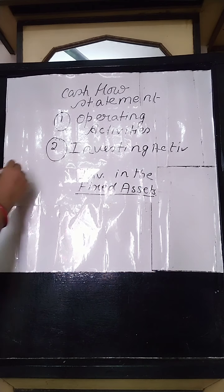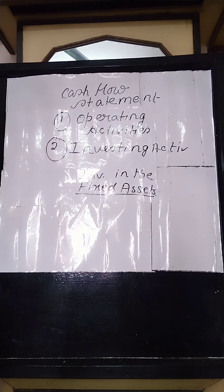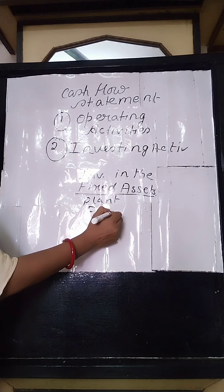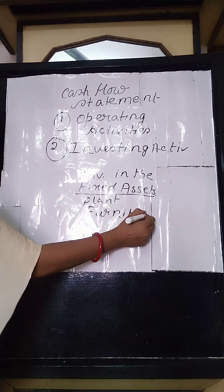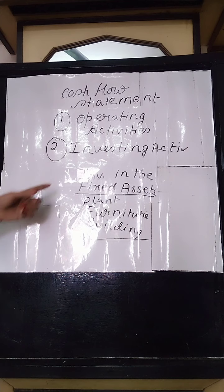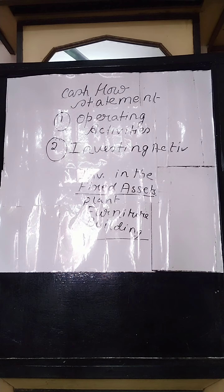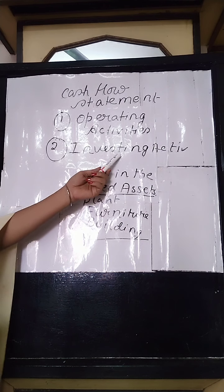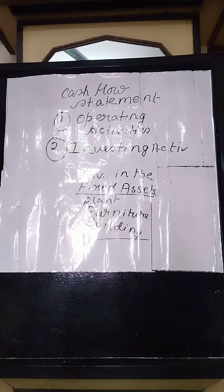The different fixed assets in a business are plant and machinery, furniture, and building. These types of assets are fixed assets. Investing activity deals with this type of fixed asset — that means either the purchase or the sale of these fixed assets will affect the investing activity.